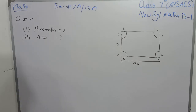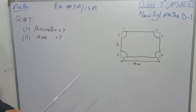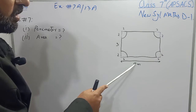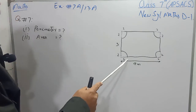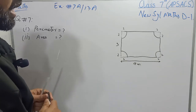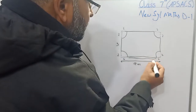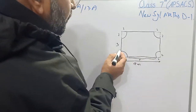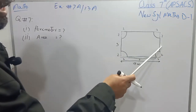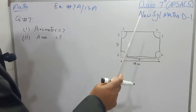First we have to find the perimeter of this figure. Keep in mind that from this corner to this corner the total length is 9 meters. Subtract 2 meters from each side, so the length from this point to this point will be 7 meters. From this point to this point it is 3 meters, and again from this point to this point the length will be 3 meters, and from this corner to this corner the length will be 7 meters.